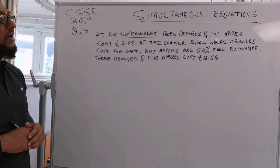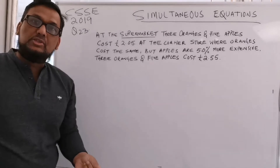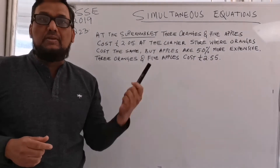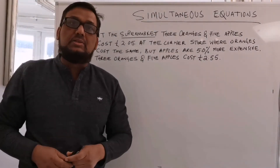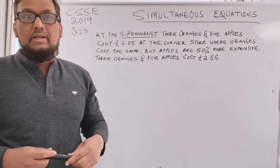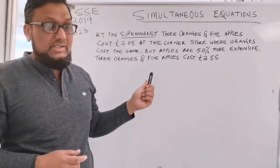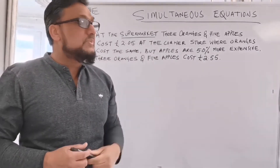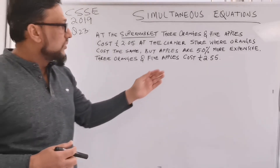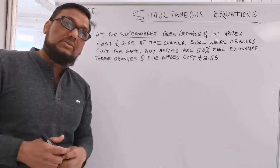So how can we solve this question? At the supermarket, three oranges and five apples cost two pounds and five pence. The corner shop is offering three oranges at the same price, but the apples are 50% more expensive than the supermarket, so the price altogether is two pounds and fifty-five pence.